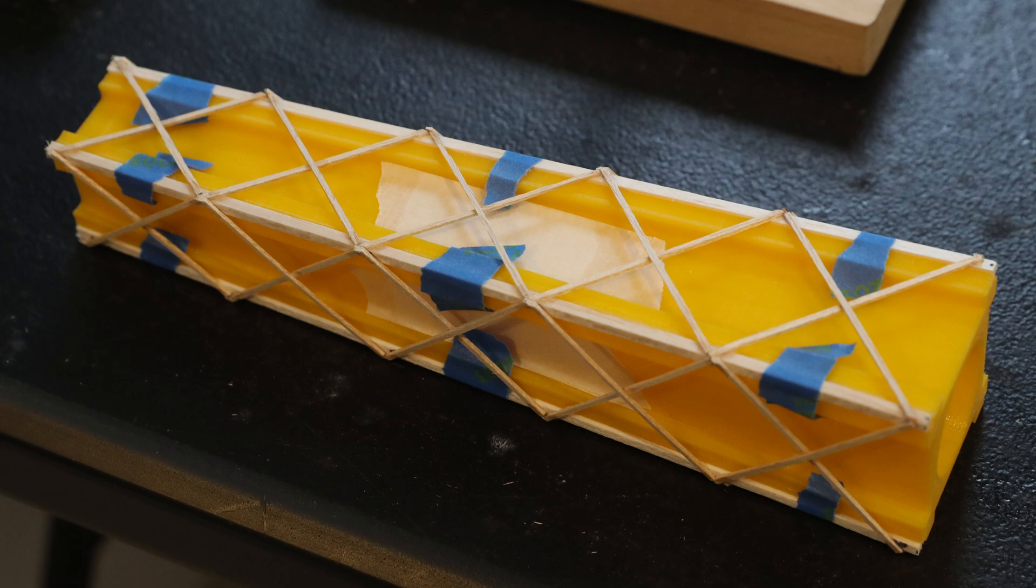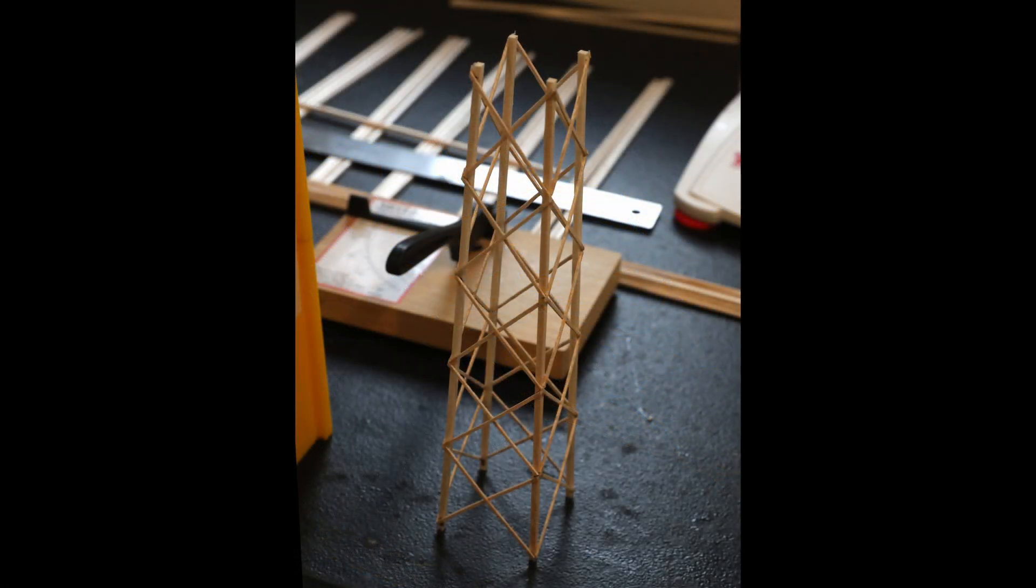Here is a completed column still on the jig and after sanding the bottom and top flat. At this point, you can remove the painter's tape holding the column to the jig and it should slide right off. If you have accidentally glued it to the jig, my recommendation is to turn it over and firmly press on the legs from the bottom to push it off rather than trying to pull it from the top. Definitely try to use less glue and take your time so that doesn't happen in the future.